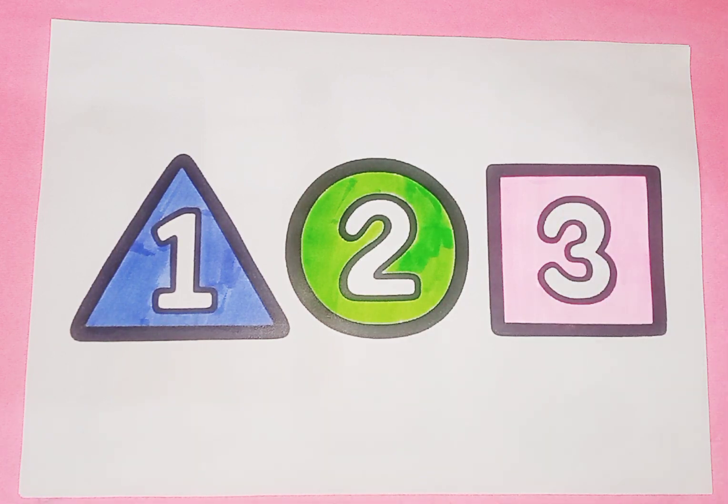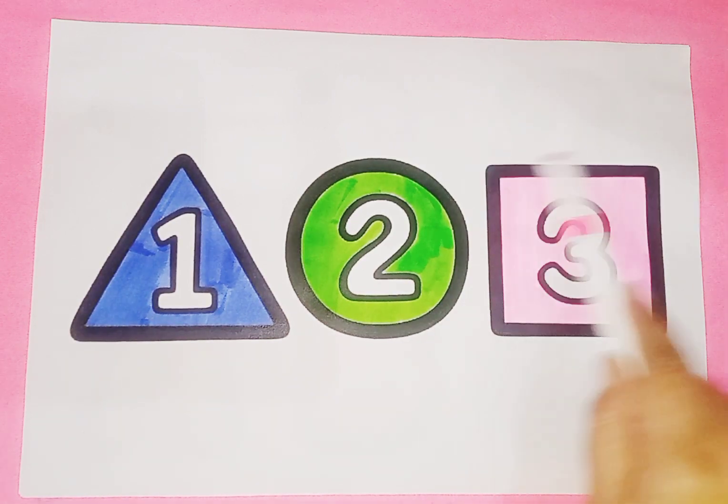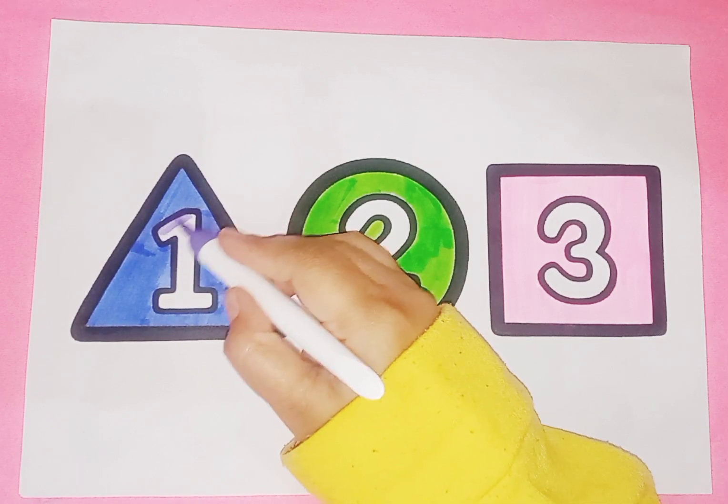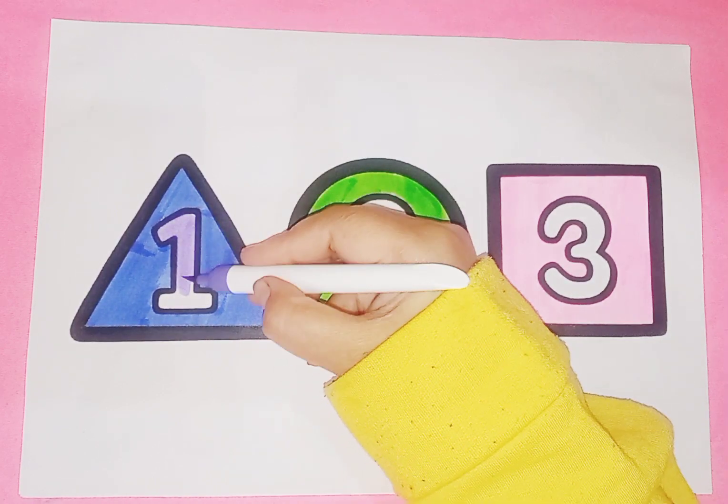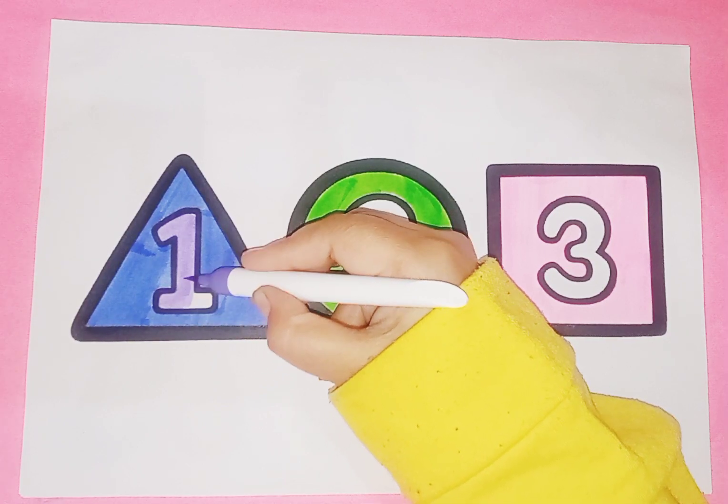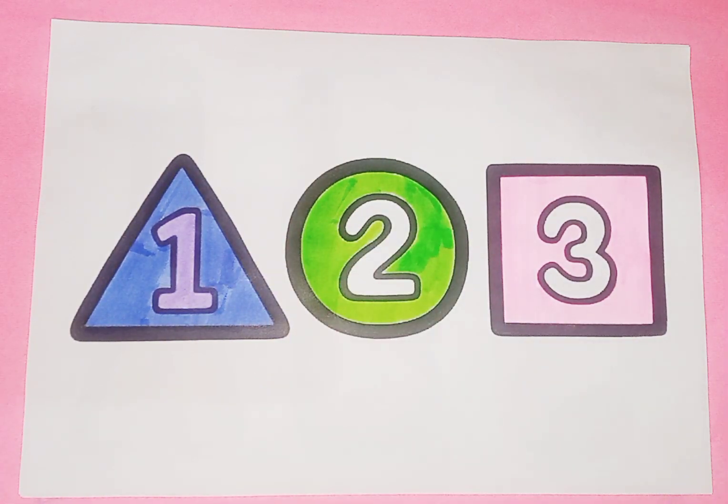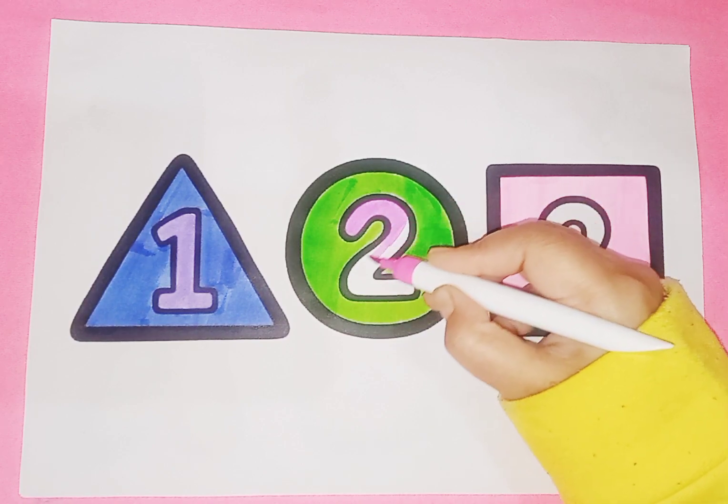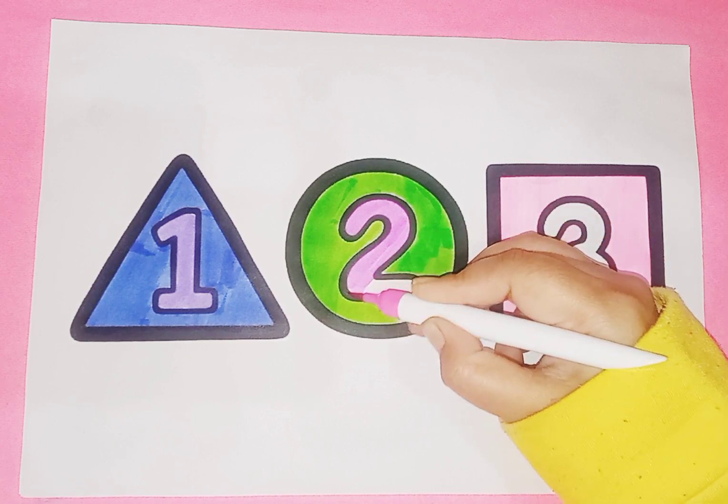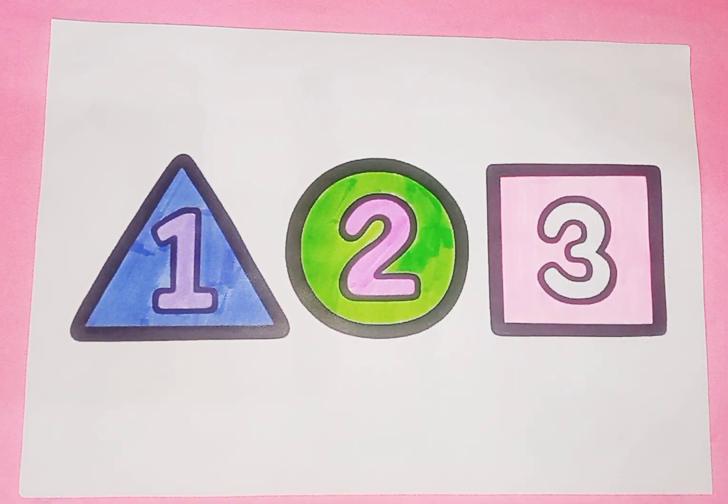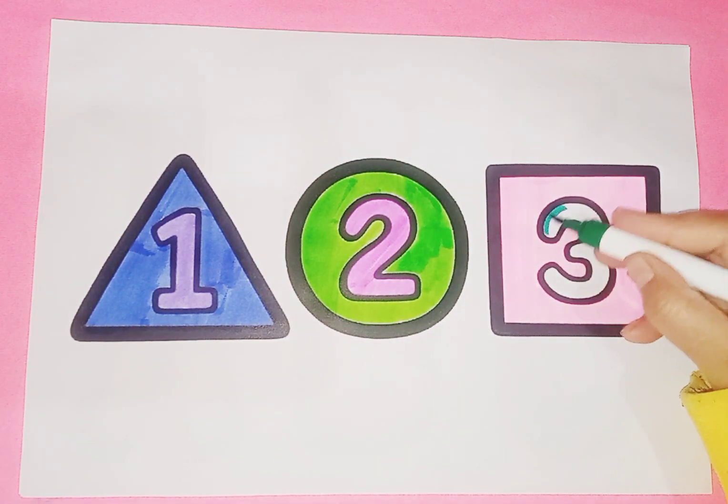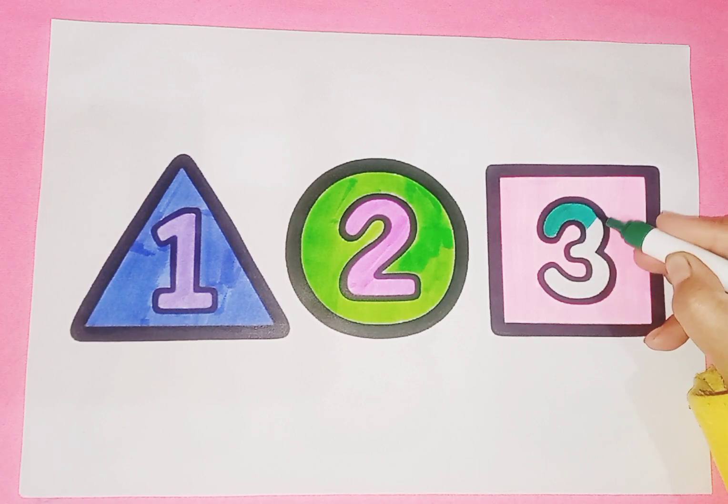Square number is three, shape is square, purple color. Number one, O-N-E, one, pink color. Number two, T-W-O, two. Green color, number three, T-H-R-E-E, three.